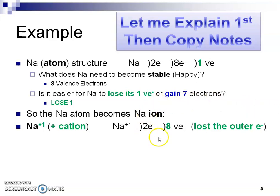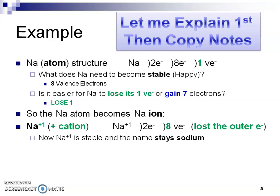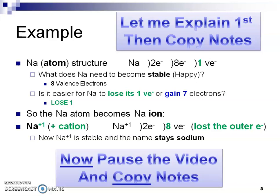Because sodium lost its valence electron, look what it has now — eight valence electrons. It used to have one, it lost it, and now it has eight, so now it is stable. We want to remember that the name stays sodium — it's a cation, so the name of the metal stays the same. Metals tend to keep their name as is. Pause the video and copy these notes.